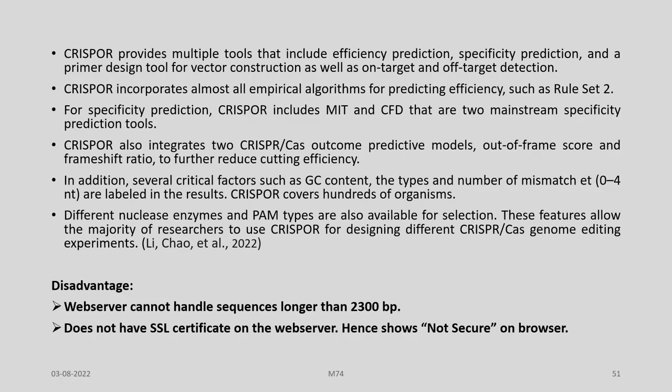Overall, the CRISPR tool provides multiple features including efficiency prediction, specificity prediction, and a primer design tool for vector construction, as well as on-target and off-target detection. It incorporates empirical algorithms such as Rule Set 2 for efficiency prediction, and MIT and CFD scores for specificity prediction. It integrates two CRISPR-Cas outcome predictive models—out-of-frame score and frameshift ratio—and covers hundreds of organisms with different nuclease enzymes and PAM types available.